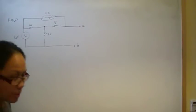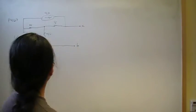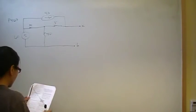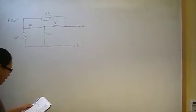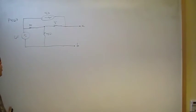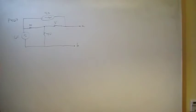Today I'm going to do problem number 67 from chapter 4 on the section on Norton and Thevenin Equivalent Circuits. Norton and Thevenin Equivalent Circuits are just source transformations of each other, so once you find one, you can always find the other just by doing a source transformation.